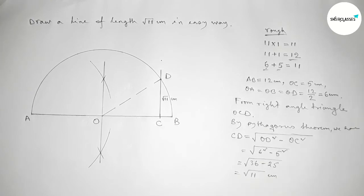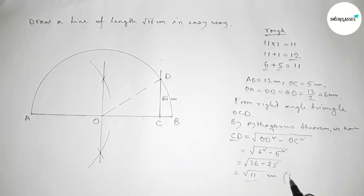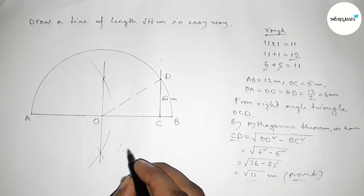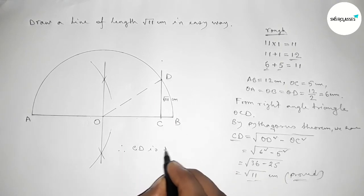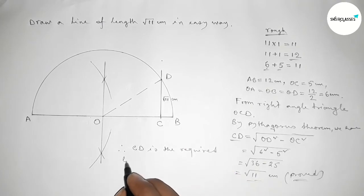Subtracting this gives root 11 centimeter. So the length of line CD equals to root 11 centimeter. Therefore CD is the required line of length root 11 centimeter.